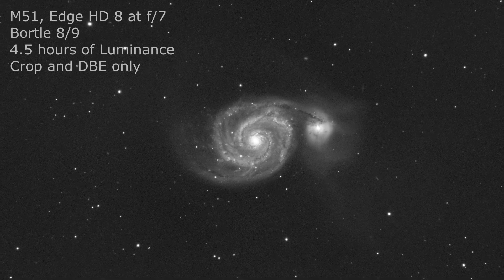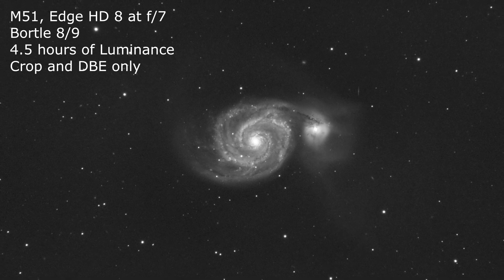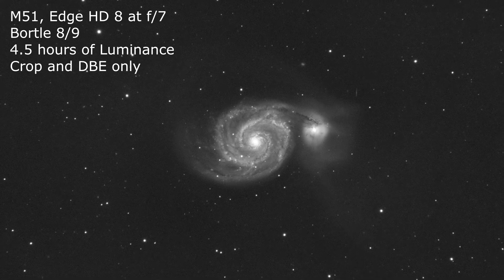So to bring out more target signal and detail, we've got to acquire more data than we would need to from a dark site. For example, on a relatively bright broadband target like M51 at F7 on my Edge 8, I would usually aim for about four hours of integration for luminance and then like an hour or so for each RGB filter.